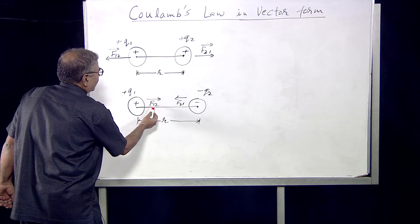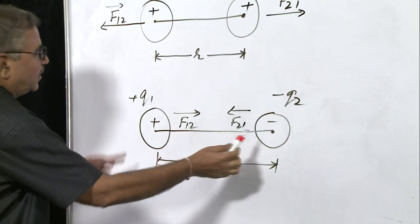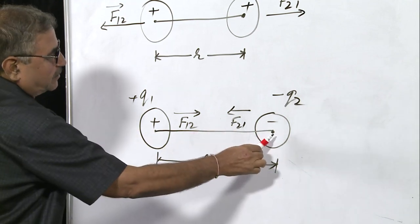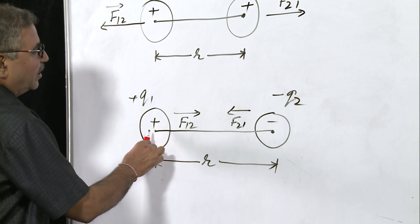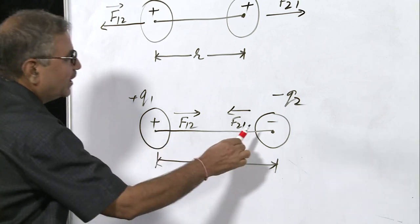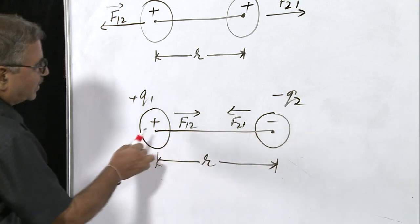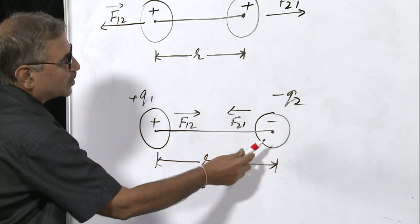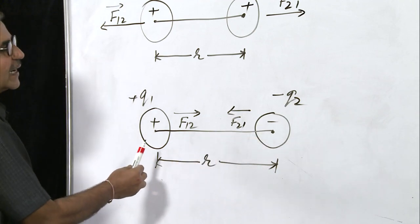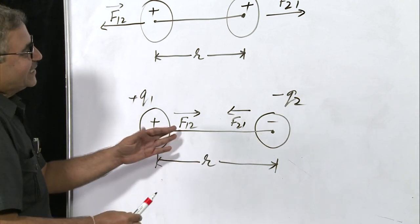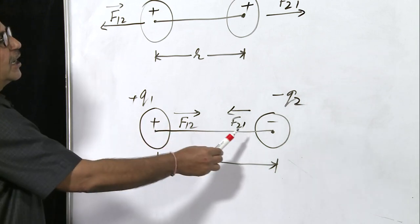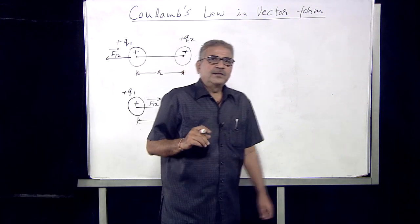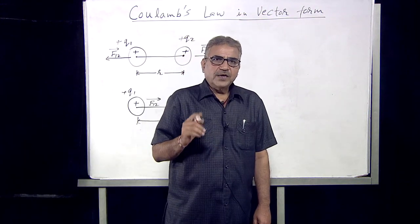Now if Q1 is a positive charge and Q2 is a negative charge, there will be a force of attraction. F12 will be directed from left to right, and the negative charge Q2 will be attracted toward the positive charge Q1, so the force on two due to one will be from right to left. Again, F12 and F21 are oppositely directed.